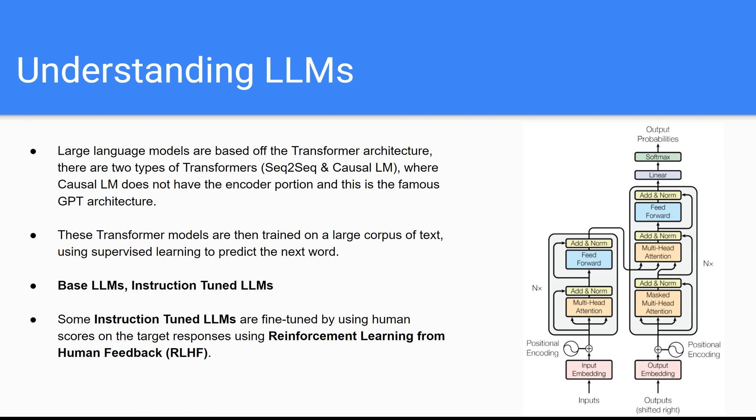Large language models are based off the transformer architecture. In 2017, the first paper on the transformer architecture was released, and this right here, this diagram, is the diagram of the transformer architecture. And there's two types of transformers.